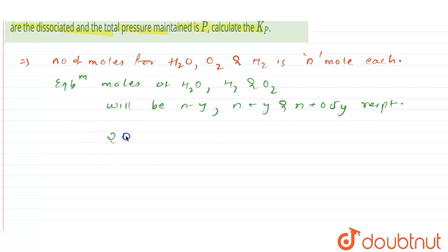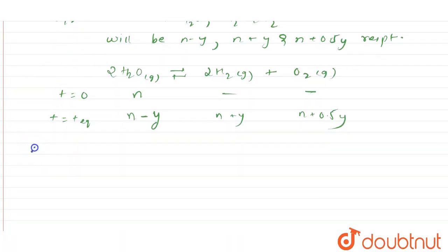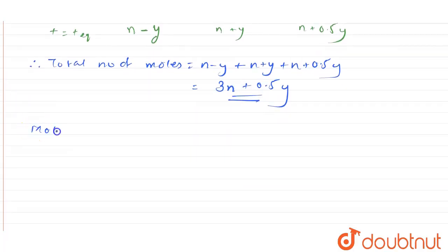Writing down the chemical reaction: 2 moles of H₂O(g) dissociates to give 2 moles of H₂ gas plus O₂ gas. At t = 0, we have n moles of H₂O and 0 for the others. At equilibrium, it will be n minus y for H₂O, n plus y for H₂, and n plus 0.5y for O₂. The total number of moles is therefore: (n − y) + (n + y) + (n + 0.5y) = 3n + 0.5y.